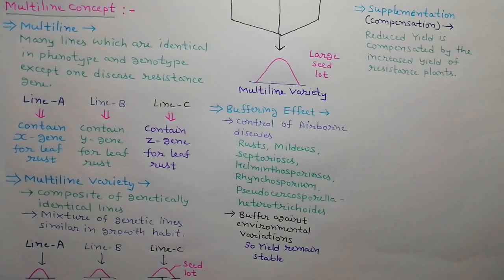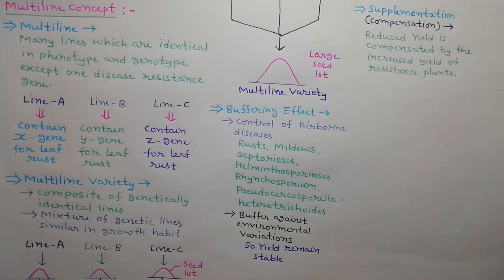Pests and diseases develop slower in multilines, but one of the lines in a multiline will be more infected than the remainder. Because of the infection, this line may use less space and fewer resources such as light, water, and nutrients than its neighbors.